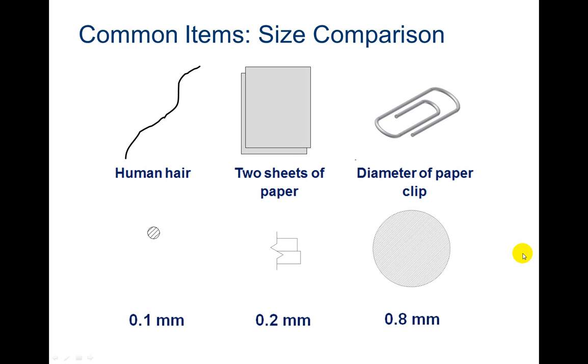So some common sizes: human hair would be about 0.1 millimeters, two sheets of paper, its thickness would be about 0.2 millimeters, and then a small paper clip would be about 0.8 millimeters.